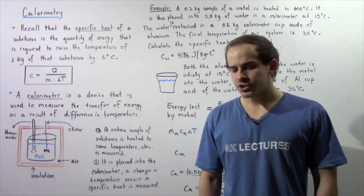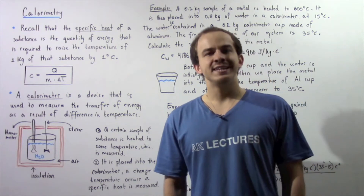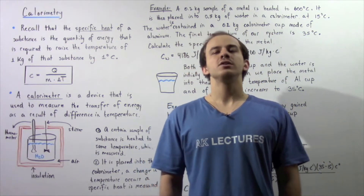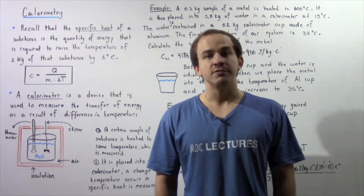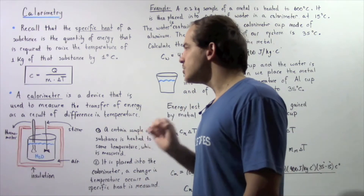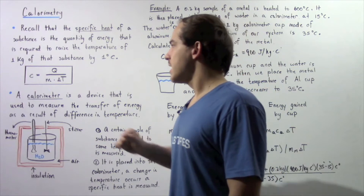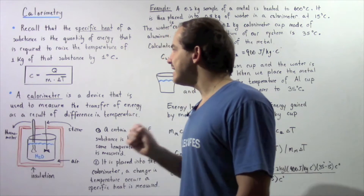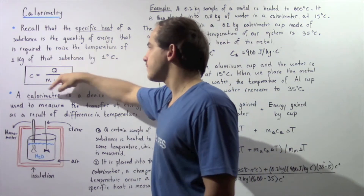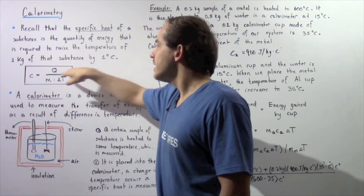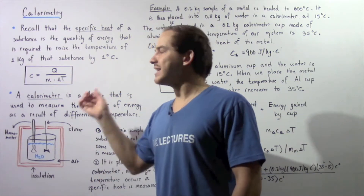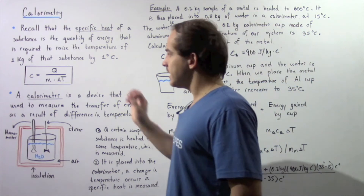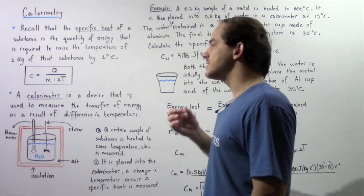What exactly is the relationship between the specific heat of a substance and the change in temperature it experiences as a result of the transfer in energy? The relationship is given by the following equation: the specific heat, lowercase c, is equal to the amount of energy transferred Q divided by the product of the mass of the object and the change in temperature. The units of specific heat are joules per kilogram times Celsius.